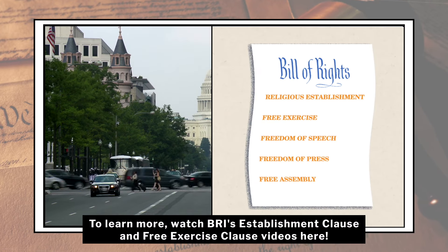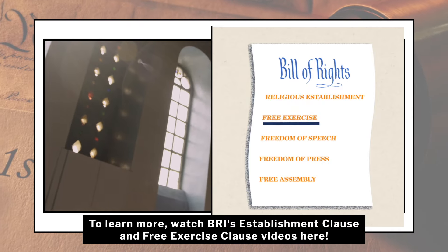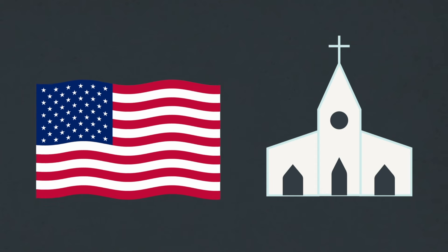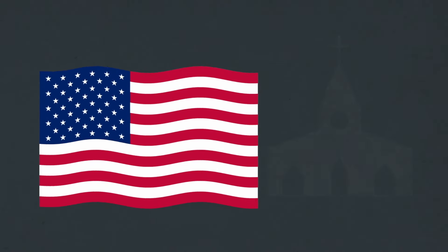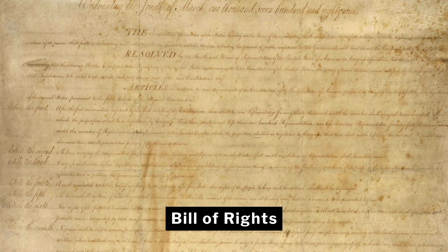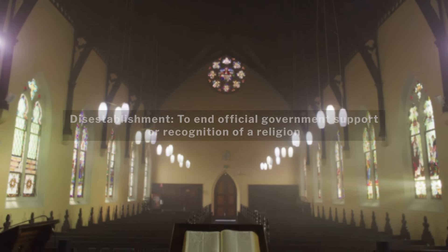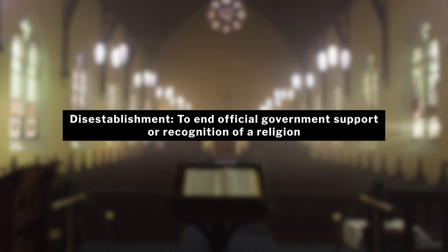There have always been debates over the nature of the religious clauses of the First Amendment. The founders had many of the same discussions we have today over how closely the government and religion should be tied. The First Amendment specifically banned Congress from establishing any religion at the national level. However, individual states had more latitude as the Bill of Rights did not apply to them. Over time, the states separated their governments from established churches and this disestablishment at all levels of government supported religious liberty.